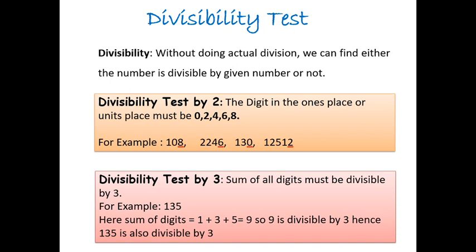Now, let us see divisibility test by 3. Sum of all digits must be divisible by 3. For example, 135. Here, sum of all digits is equal to 1 plus 3 plus 5 is equal to 9. So, 9 is divisible by 3. Hence, 135 is also divisible by 3.